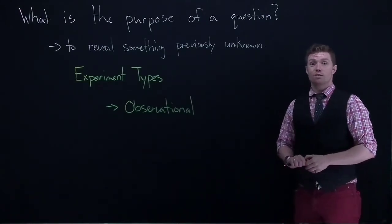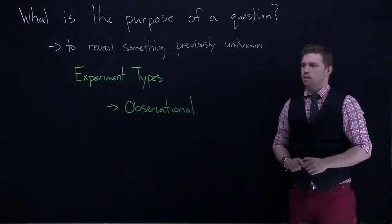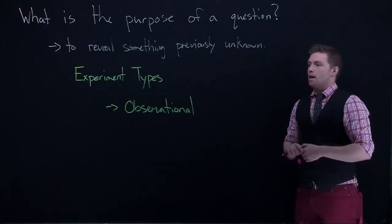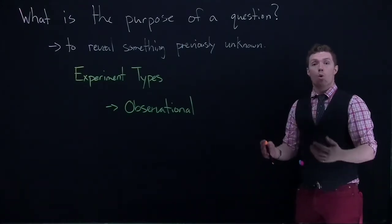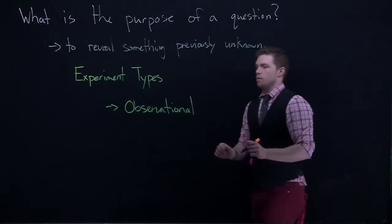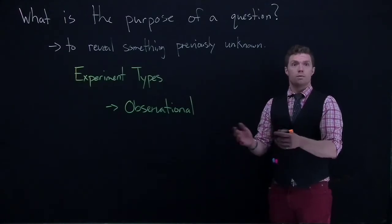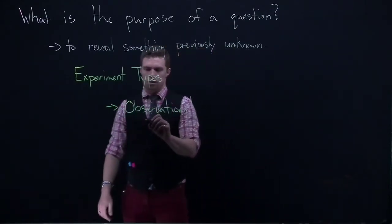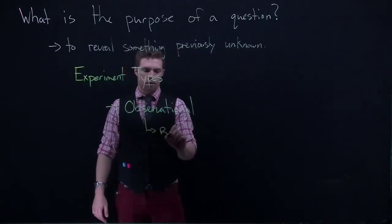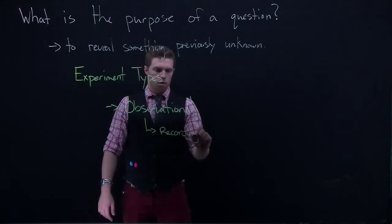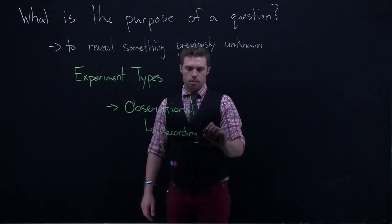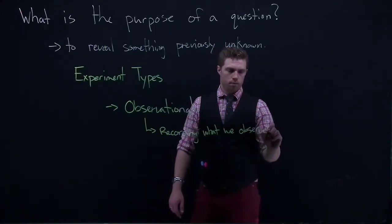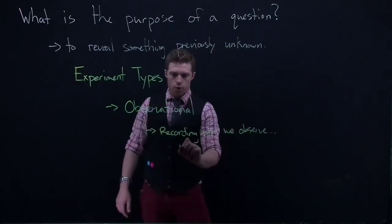Okay, so experiment type number one is observational. And observational experiments are experiments in which we just observe maybe people's habits or maybe we're just observing what animals are doing in the wild and we are literally just watching them and recording what is going on. So a lot of times like surveys, surveys are observational experiments where we are just asking people and we're just recording data about what has happened. So observational is we are just recording what we observe, and I'm just going to put in here: no intervention.